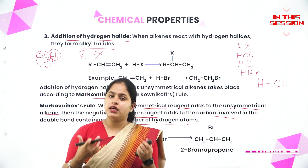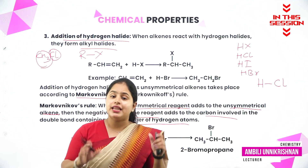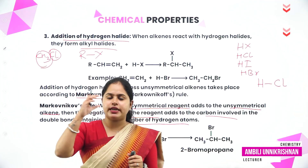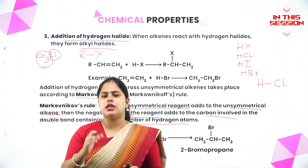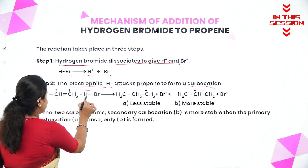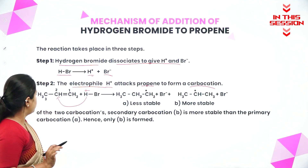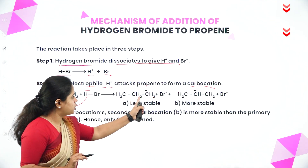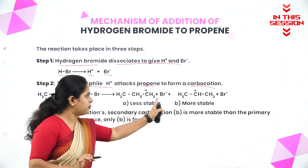If you are adding a reagent to an unsymmetrical alkene, the negative part of the reagent will get attached to the carbon atom which is having less number of hydrogen. If the hydrogen is getting attached to this particular carbon atom, you will get CH3, CH2, CH2+, and Br-.